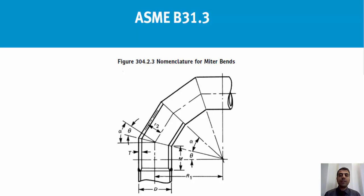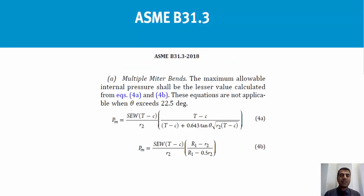A miter bend made by two segments and one cut is named a single miter bend. A miter bend with three or more segments and two or more cuts is called a multiple miter bend. Please note that a single miter bend is rarely used, so I am going to focus on pressure design of multiple miter bends in this episode.